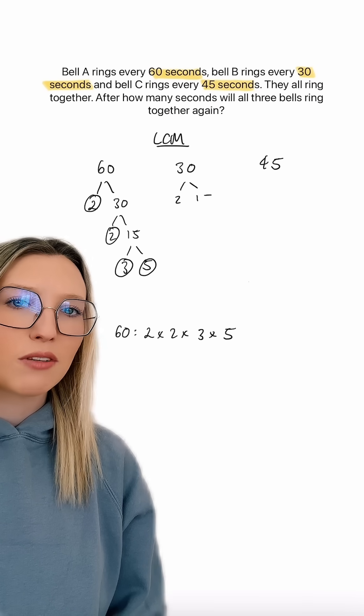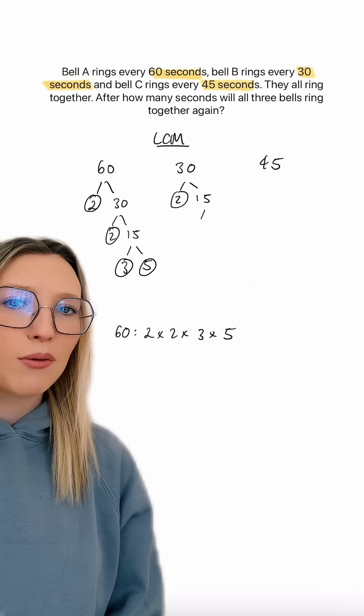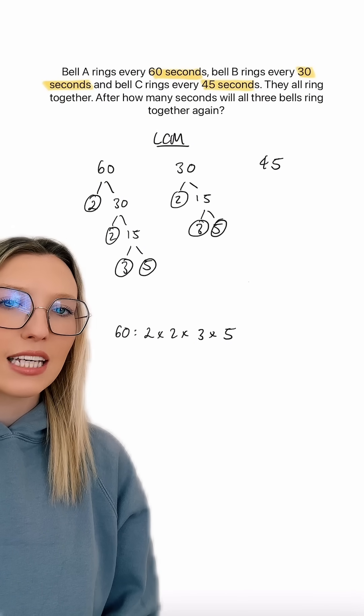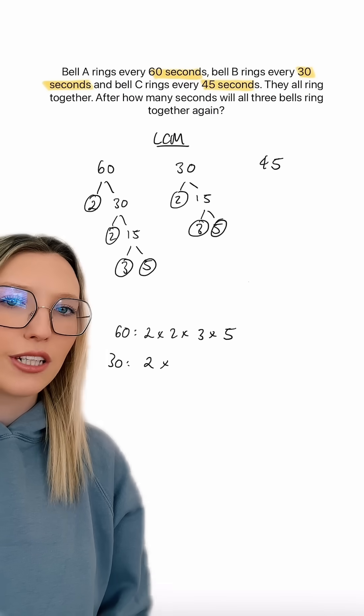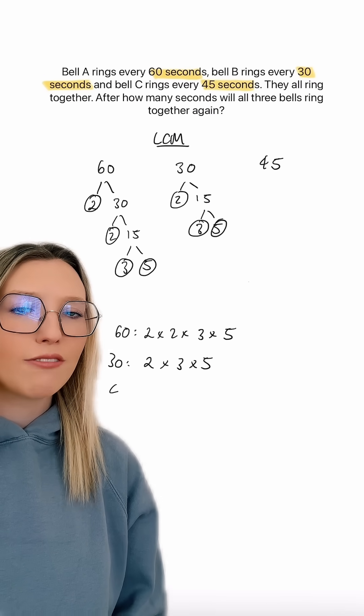Doing the same now for 30, we can write this as 2 times by 15, and then we can separate 15 into 3 and 5. So 30 as a product of its prime factors is 2 times by 3 times by 5.